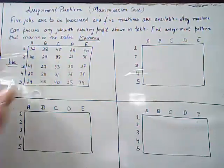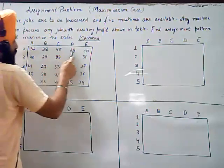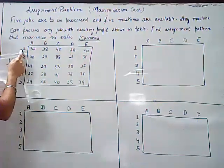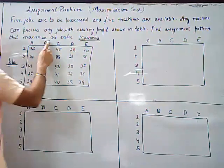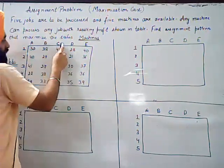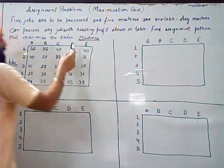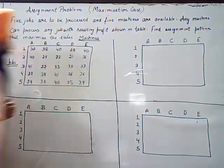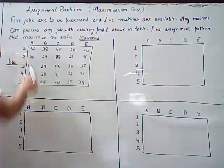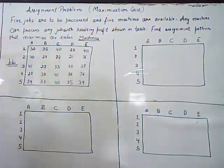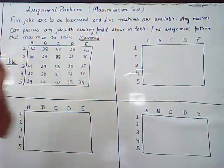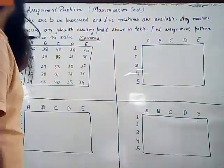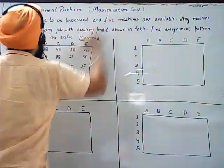The profit values for job one are 32, 38, 40, 28, and 40. If job one is machined on machine A the profit is 32, on machine B it is 38, on machine C it is 40, similarly 28 and 40 on machines D and E. The remaining profits are also shown in the table. We have to find the assignment pattern that maximizes the profit — this is our maximization case assignment problem.